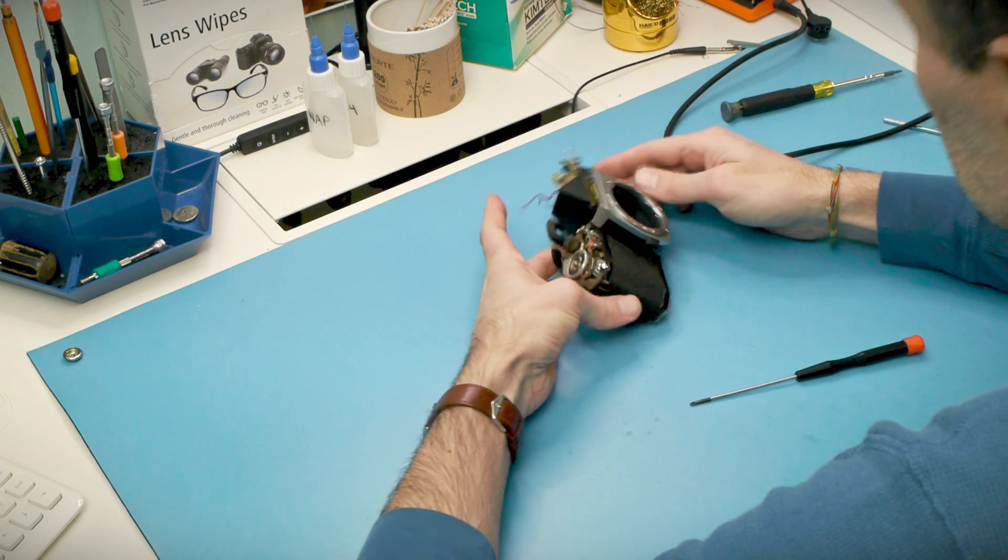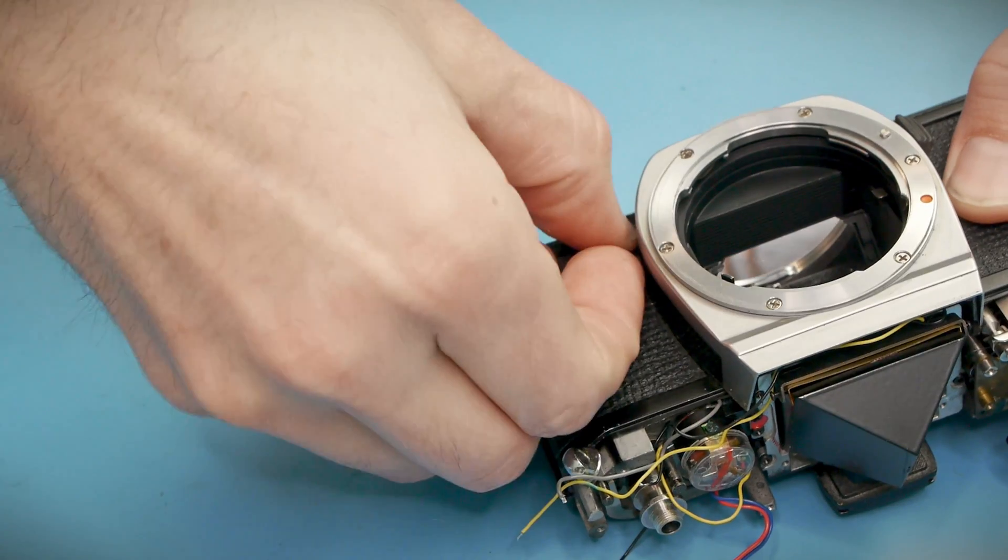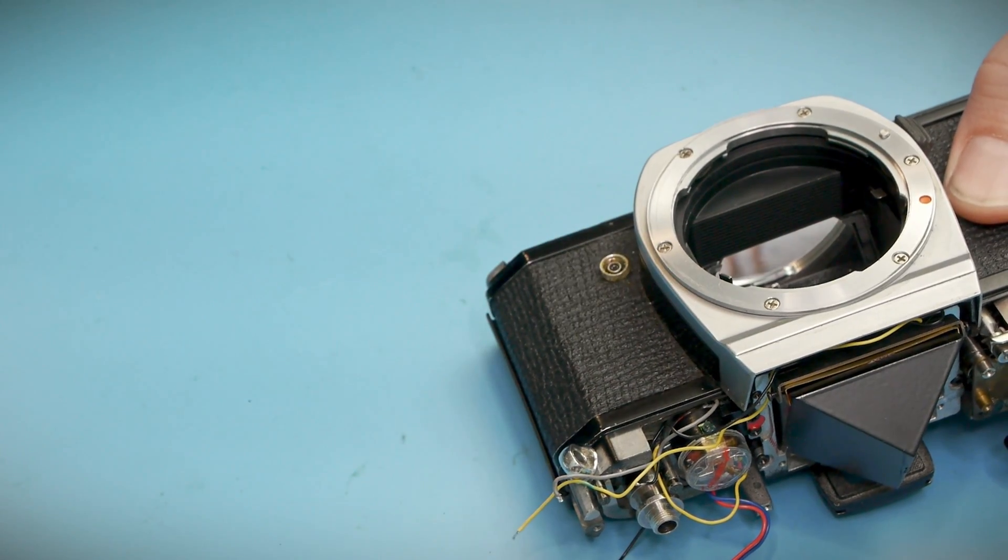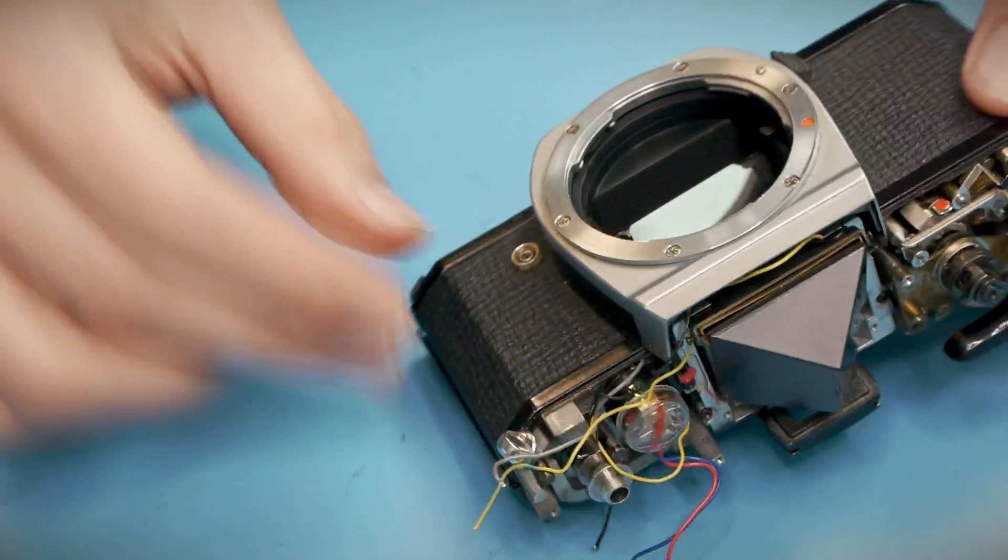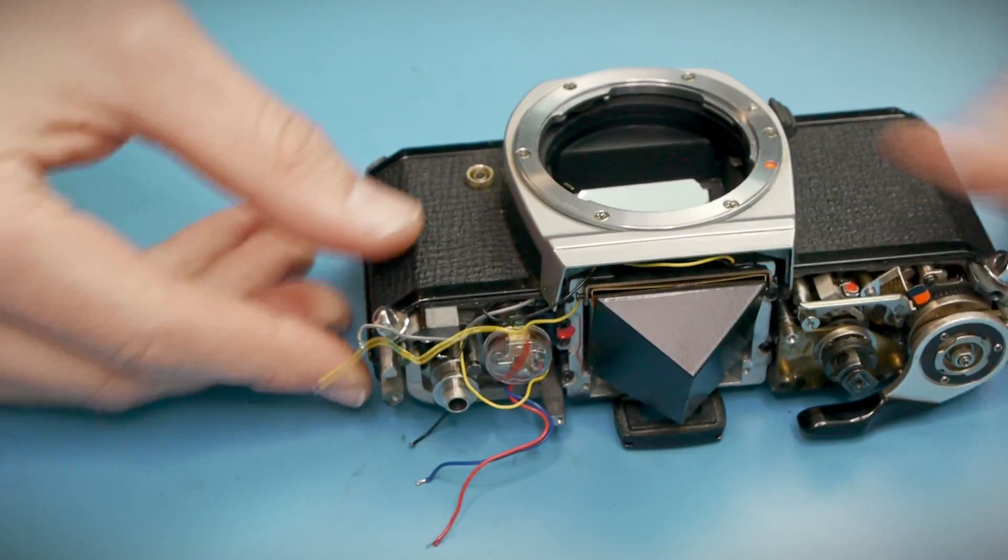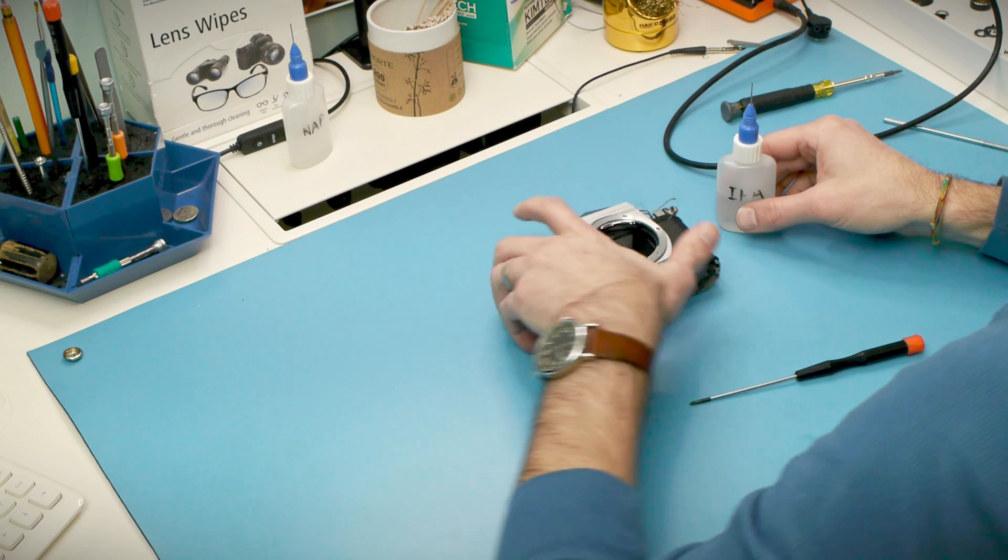Okay to get any further into this camera I'll need to take the leatherette covering off because the main attachment points for the front lens board are hidden underneath. I'm going to start with some isopropyl alcohol along the edge of the panel to get my scraper started.